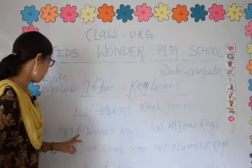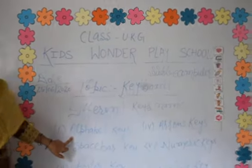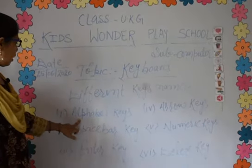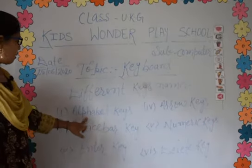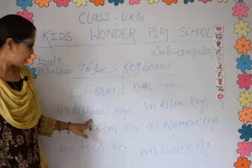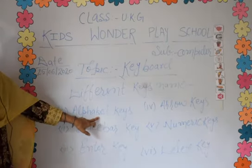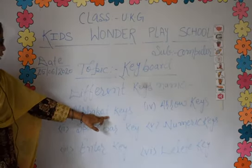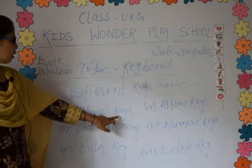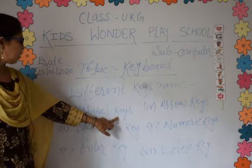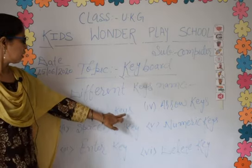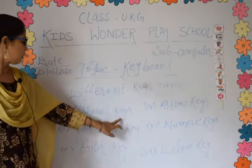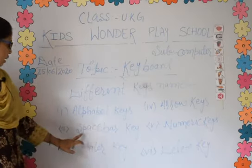So let's start with a spelling. A, L, P, H, A, B, E, T — Alphabet. K, E, Y, S — Alphabet keys.